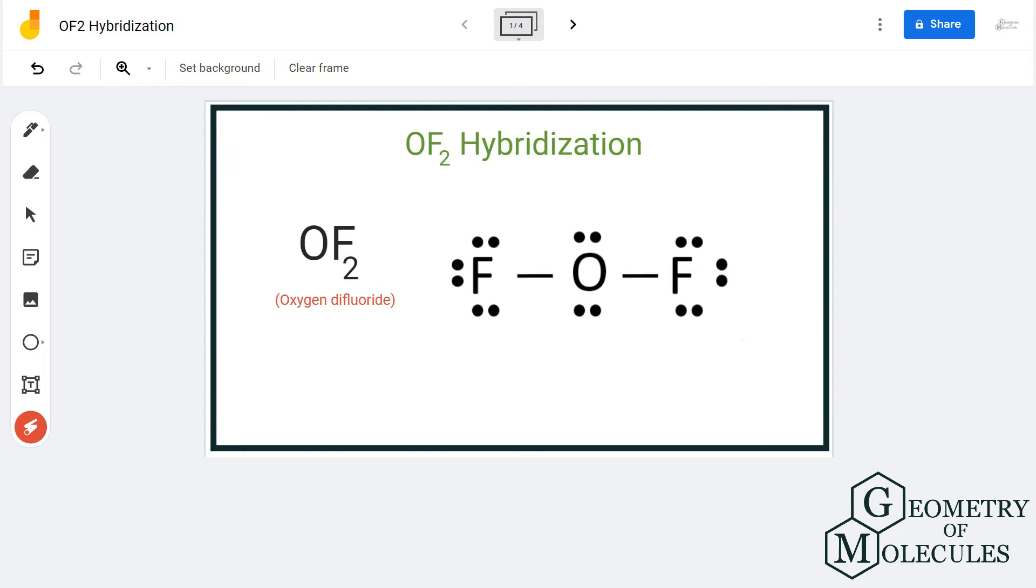Hi guys, today in this video we are going to look at the hybridization of OF2 molecule, the chemical formula of oxygen difluoride. To understand its hybridization, we are first going to look at its Lewis structure, followed by the number of hybrid orbitals formed in this structure and the hybridization.